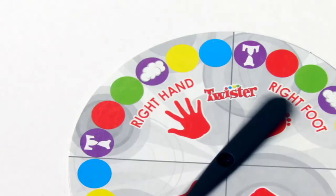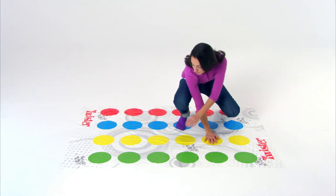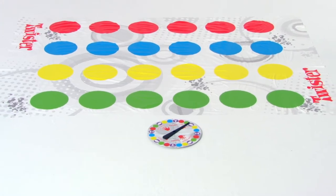Give the spinner a whirl and see what's next as you try to keep your hands and feet on the mat. If your knee or elbow touches the mat or you fall over, you're out. Be the last player standing to win!